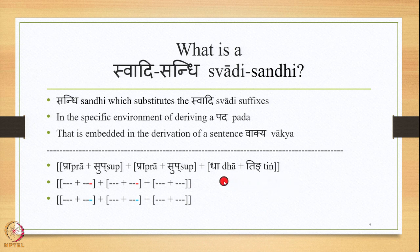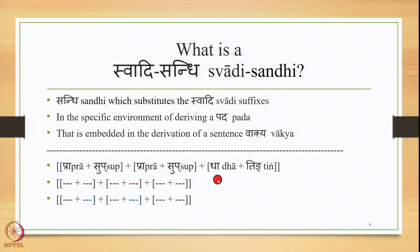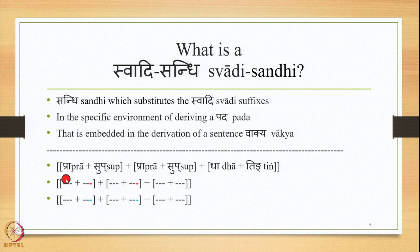Let us review this. This particular sentence consists of three Padas. This is one PRA plus SUP, the second is PRA plus SUP, and the third is DHA plus TIN. According to the definition of the sentence, namely Ekatin Vakyam, there has to be one TIN for this unit to be called a sentence. The PRAKRITI of this TIN is DHATU, mentioned here by the initial sound DHA. The remaining Padas are all Subantas ending in SUP, and the PRAKRITI for the SUP is PRATIPADIKA, mentioned by the initial sound PRA. So: PRA plus SUP plus PRA plus SUP plus DHATU plus TIN.